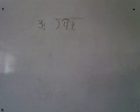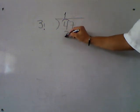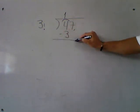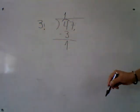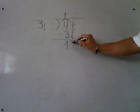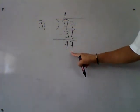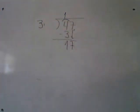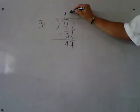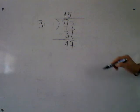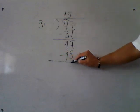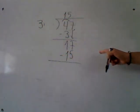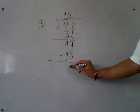Does 3 fit in 4? Yes — how many times? 1. Multiplication: 1 times 3 is 3. Subtraction: 4 minus 3 is 1. Does 3 fit in 1? No, because 3 is bigger than 1. So I bring down the next number, which is 7. Now I have 17. How many times does 3 fit in 17? 5 times. 5 times 3 is 15. Write the answer. Subtraction: 17 minus 15 is 2.